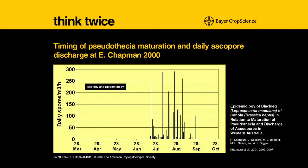I'm going to highlight results from one trial we did in 2000. This data is from East Chapman, where we looked at timing of Pseudothecia maturation and daily ascospore discharge pattern. As you can see, the fruiting bodies of Pseudothecia were matured in East Chapman around the 10th or 11th of July. Once the Pseudothecia were matured, ascospores started releasing from those fruiting bodies.